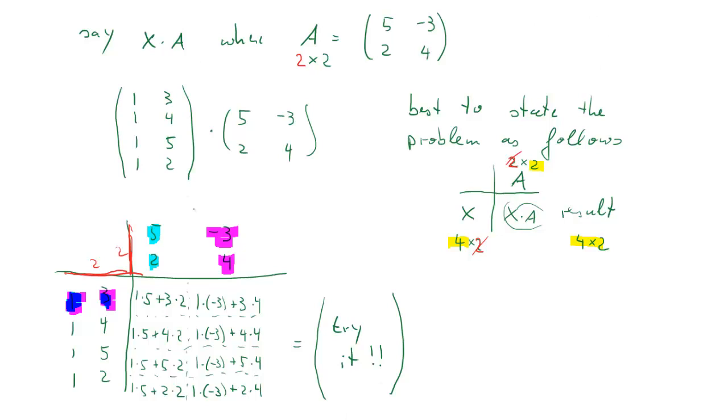Here's the result: 11, 13, 15, 9 in the first column, 9, 13, 17 and 5 in the second column. So as predicted, the dimension of this result matrix of our multiplication is a 4 by 2 matrix.